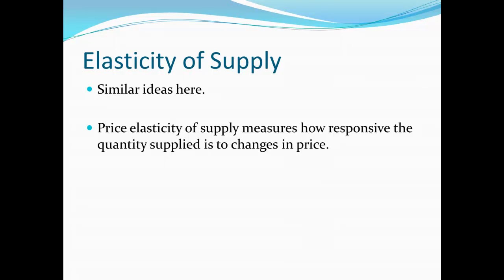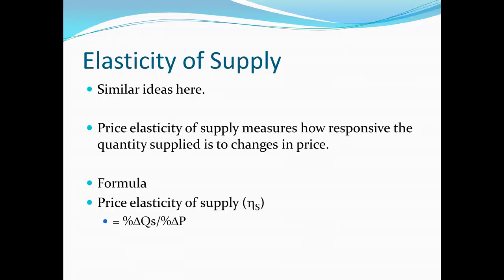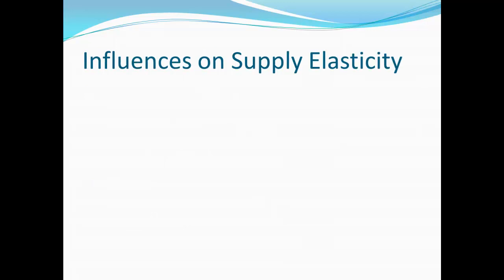We're talking about suppliers and their response. The formula is also virtually identical. That is, the price elasticity of supply, which we denote as eta S, is equal to the percentage change in the quantity supplied divided by the percentage change in price along any particular supply curve. This is absolutely identical to the price elasticity of demand, just putting supply in instead.